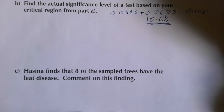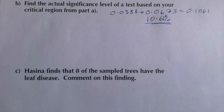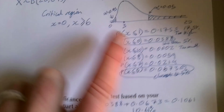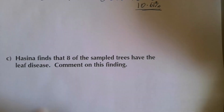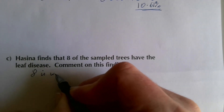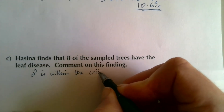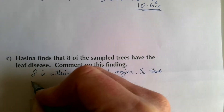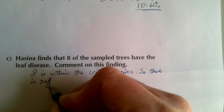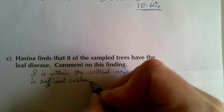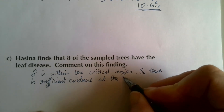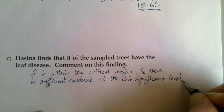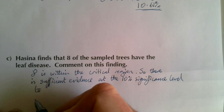Hasina finds that eight of the sampled trees have the leaf disease — comment on this finding. Eight is inside the critical region (x ≥ 6), so there is sufficient evidence at the 10% significance level to reject the null hypothesis.